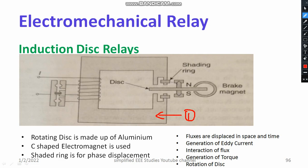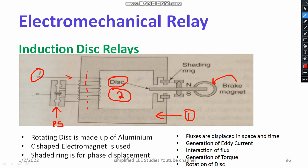Number two, we have an aluminium disc. Number three is your plug setting — I will explain what plug setting means. You can also see the operating current and a brake magnet. You can also see a shaded ring. The shaded ring produces a flux which is opposite to that of the main flux. As soon as you provide the current, there is generation of flux phi-1. Due to the shading, one more flux phi-2 is generated.